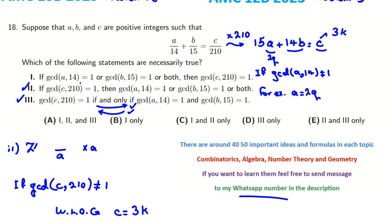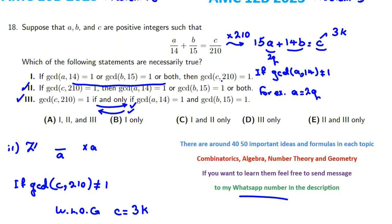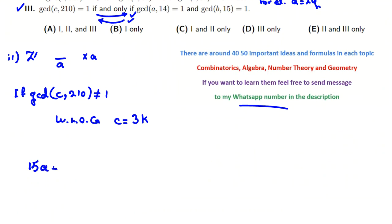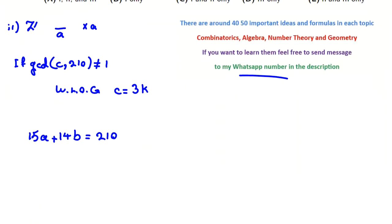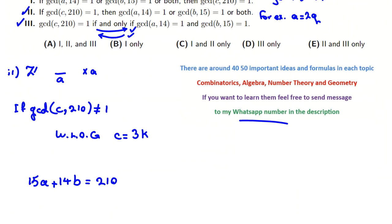So, it was related to logic. If you had any question about these things, you can send message to my WhatsApp number. And for first one. For first one, it says if GCD of A and 14 is 1 or B and 15 is 1 or both. Then, GCD of C and 210 is 1. No. Well, I tried to find a case that it satisfies this one. For example, one of them, but it doesn't satisfy the next one. So, let's find 15A is 1. When we want to say one condition is wrong, we should find a counterexample. 210.